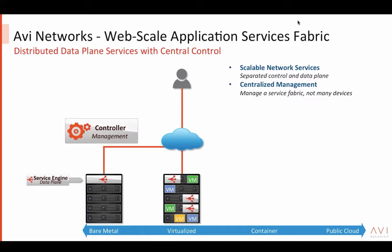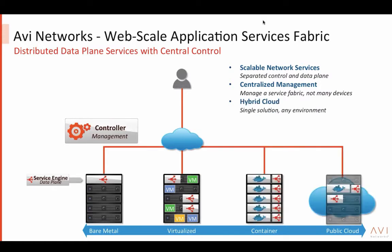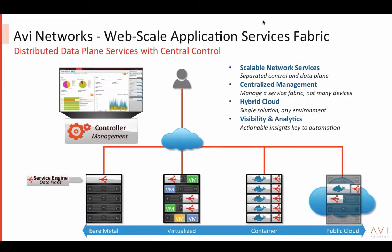The distributed data plane — we call them service engines — can run on a bare metal server, as a virtual machine on KVM or any other hypervisor, as containers, or in a public cloud environment, all simultaneously managed by a centralized AVI controller. In addition to load balancing, the service engines act as distributed network probes. Without any agents or span ports, they sit in-line with traffic, collecting hundreds of metrics and logs per second, pushing data to the AVI controller which runs a big data analytics engine and provides a centralized dashboard.